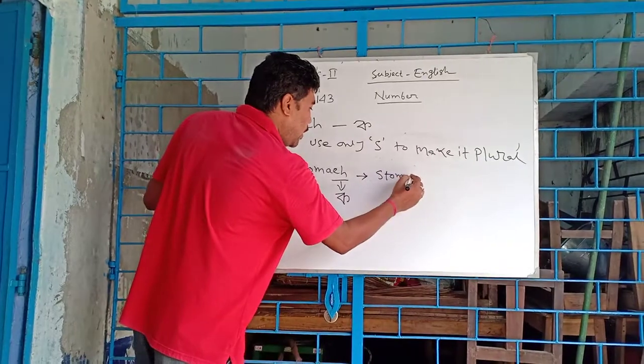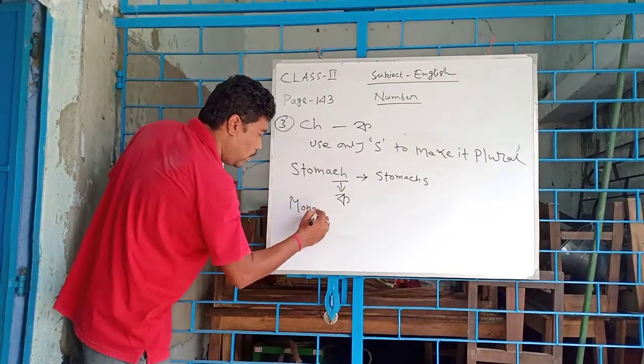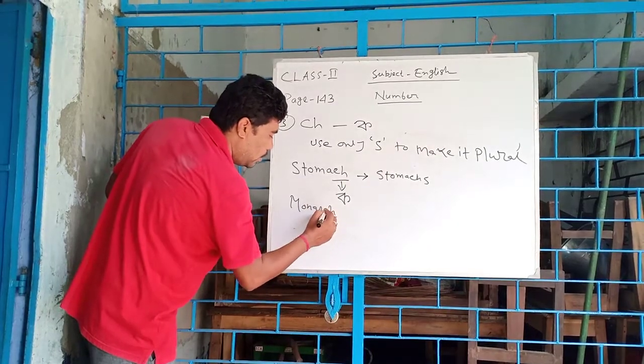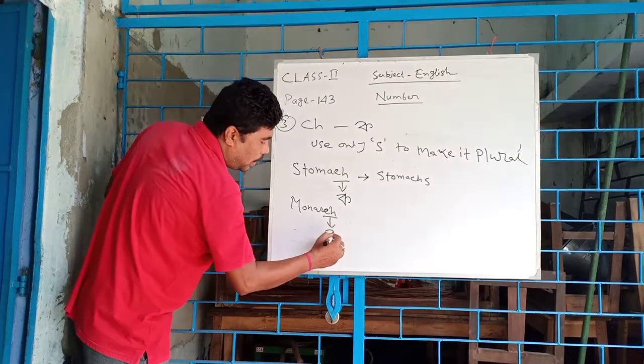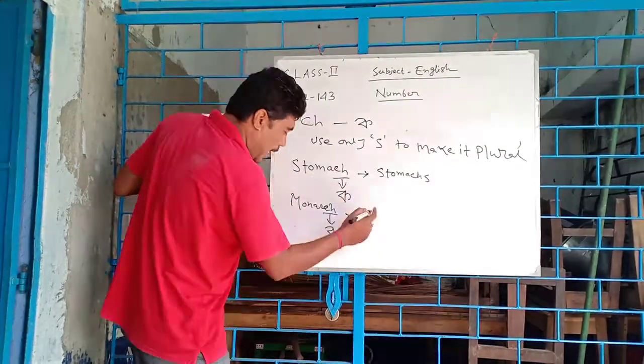Or monarch. CH, it is also pronunciation like K in Bengali. So, we use S here.